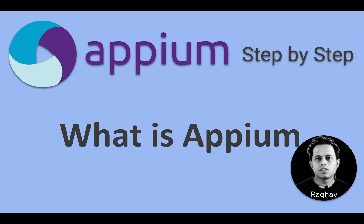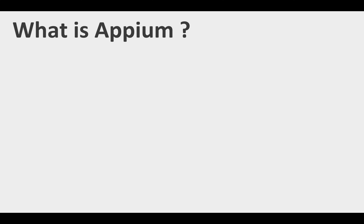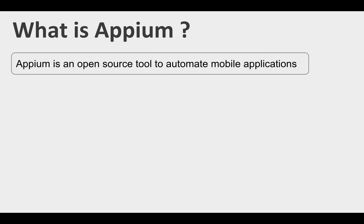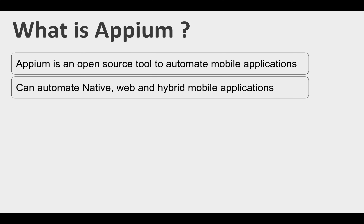Hello and welcome, I'm Raghav and today we are going to learn what is Appium. I will go very basic step by step, so do not worry if you do not know anything about Appium — we will start from scratch. Appium is an open source tool to automate mobile applications, used to automate or do test automation on mobile applications. With Appium we can automate native, web, and hybrid mobile applications — hybrid being a combination of native and web.